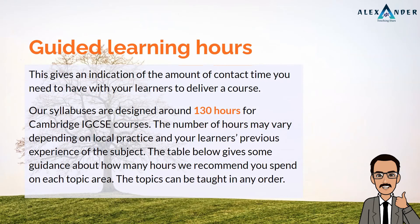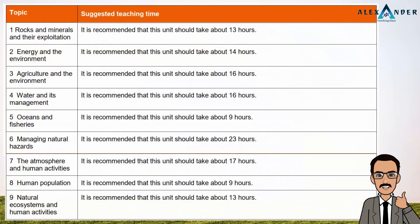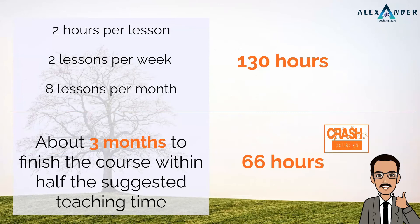Cambridge IGCSE courses are designed around 130 hours of guided learning, and topics can be learned in any order. Here is a breakdown of the suggested teaching time for each chapter. From my experience, this course will require that much time to do proper justice to all topics and the skills required to get an A-star. Normally, I take 2 hours per lesson, 2 lessons per week, or 8 lessons per month, covering about 130 hours of teaching.